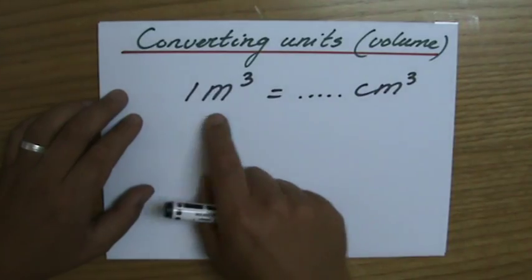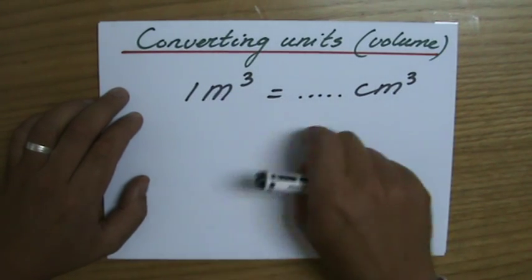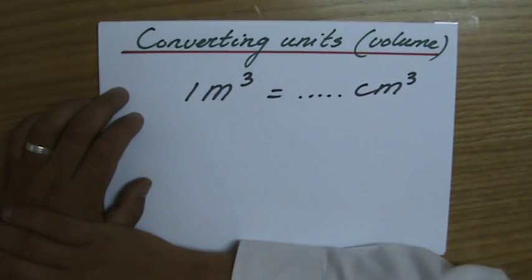And now some of you will say, well, a meter is 100 centimeters, so a meter cube is 100 centimeter cube. Yeah, but that's not how it is.